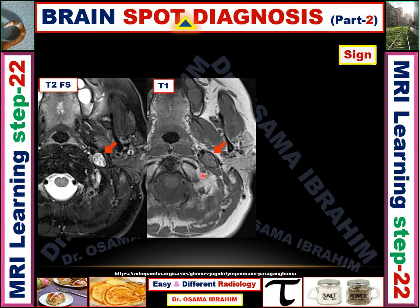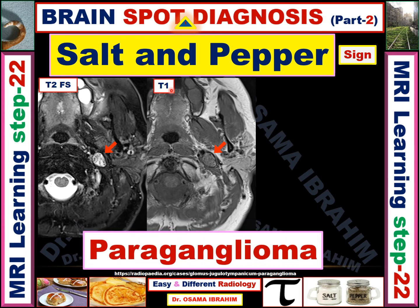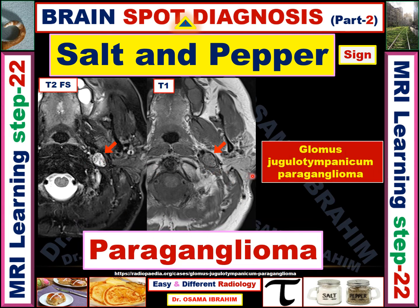If you get the correct name of the sign, you can make the correct differential diagnosis for the lesion. These lesions are at the carotid space and extending to the jugular region. They have high signal on T2 and there are multiple spots of signal void or low signal — this looks like salt and pepper. This is called the salt and pepper sign, due to signal voids representing vessels and dots of high signal representing hemorrhage or stagnation of blood within the vessels. When you find the salt and pepper sign at the carotid space and jugular space, it represents paraganglioma — specifically, a glomus jugulotympanicum paraganglioma.